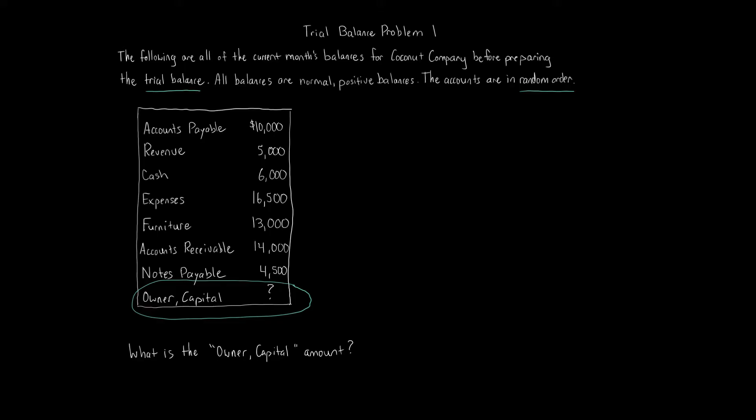The trial balance — we put items in order: first balance sheet items — assets, liabilities, owner's equity, stockholder's equity — then revenues and expenses from the income statement. There are also contra accounts that factor in. So we're going to go through each account and classify what it is: is it an asset, a liability, a revenue, an expense, or equity?